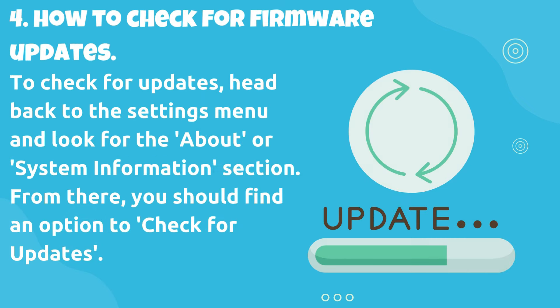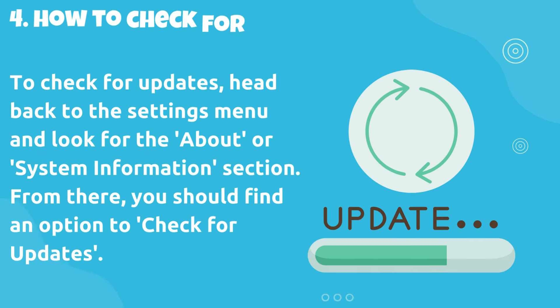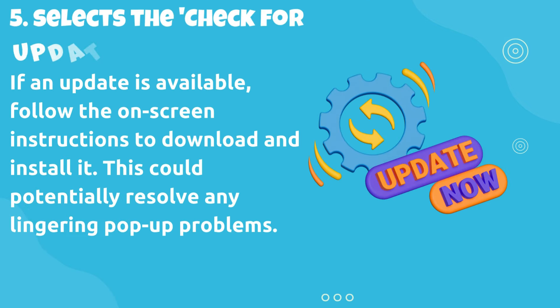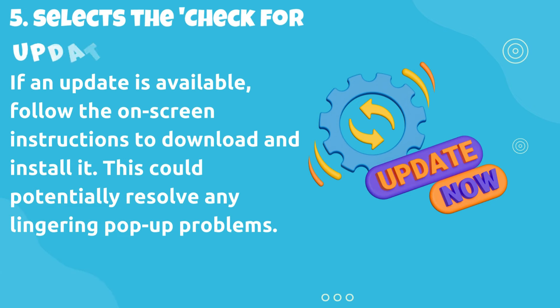How to check for firmware updates: to check for updates, head back to the settings menu and look for the About or System Information section. From there, you should find an option to check for updates. Select the check for updates option. If an update is available, follow the on-screen instructions to download and install it.